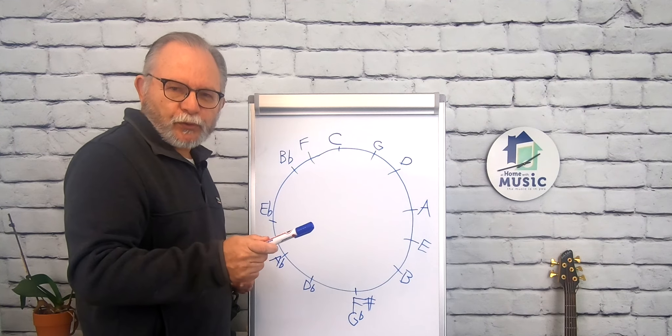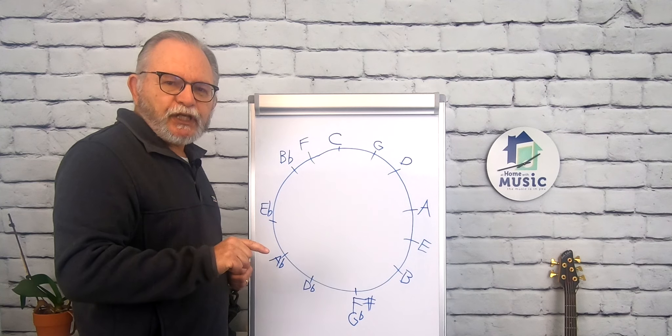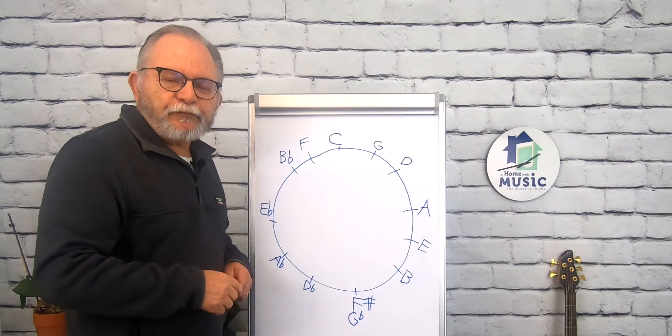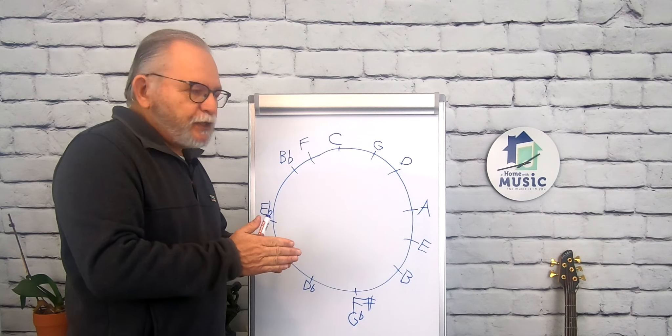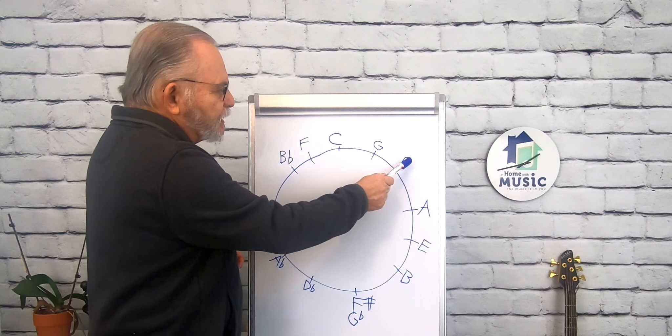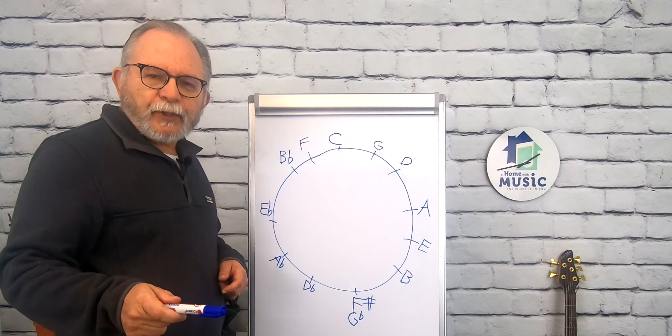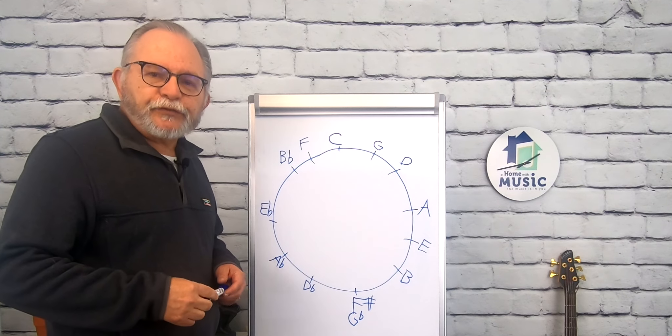Now if you play the G major chord in root position, the three notes are going to be G, B, and D. So there's your next note. And if you play the D major chord in root position, meaning the root is the lowest note, then your three notes are going to be D, F sharp, and then A. So there's another way that you can find the notes as you're building the circle of fifths.